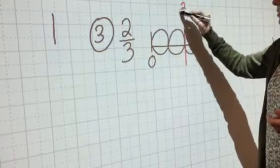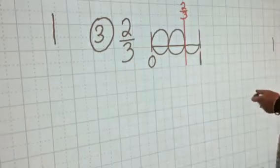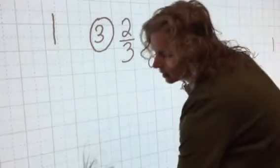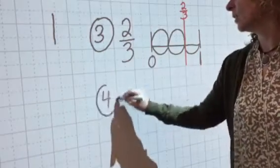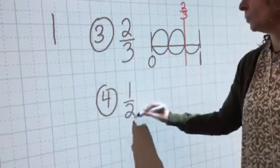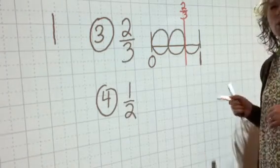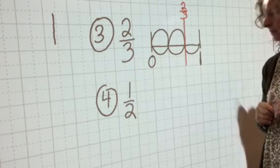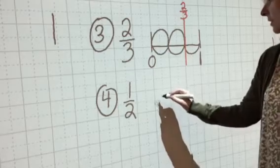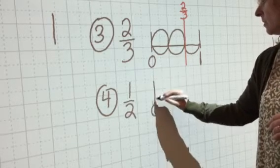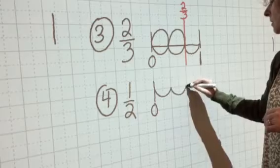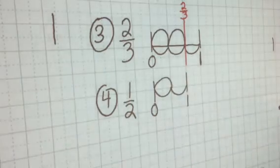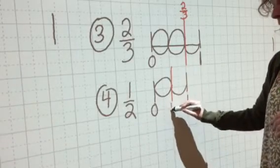And lastly, 1/2. Pause the video and mark 1/2 on a number line that you've created. Alright, let's see how you did. We always start at zero: 1, 2 - one hop over, one, and now we are at 1/2.